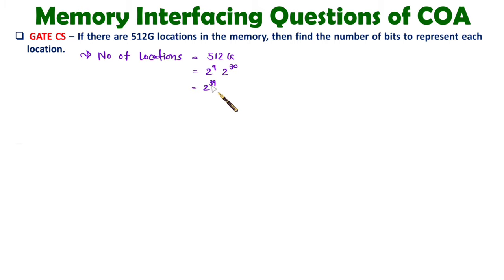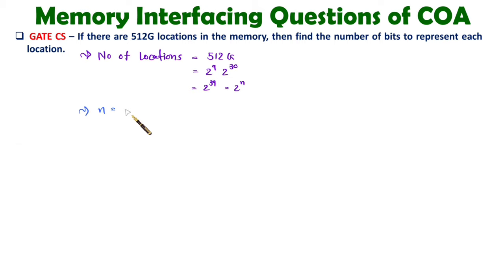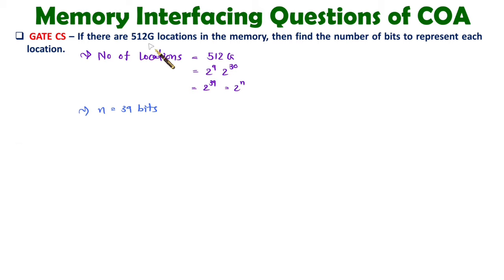The reason I am converting this in terms of 2 to the power N is that 2 to the power N defines the number of bits required to represent each location. So here N is 39, which means the locations are based on 39 bits. If you have 39 bits, then in total you can represent 2 to the power 39 number of locations, which is 512G locations.